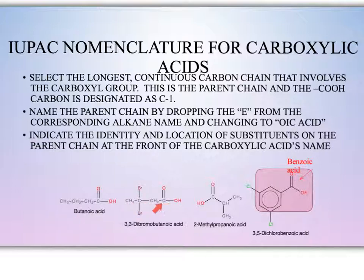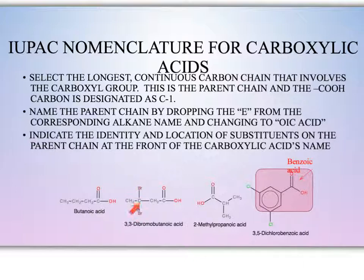In this next example we count one, two, three, four carbons — so we have a butanoic acid. Carbon one is the carboxyl carbon, carbon two, then carbon three has two bromines coming off, so we would name this 3,3-dibromobutanoic acid.